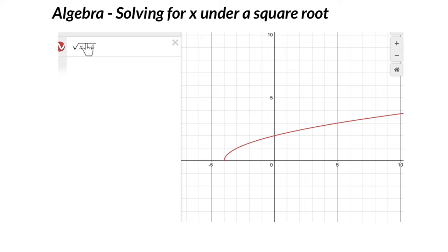So first of all, just notice we've got the square root of x plus 4, so the square root function, you know what that looks like, and then it's been shifted left 4, so here it is.